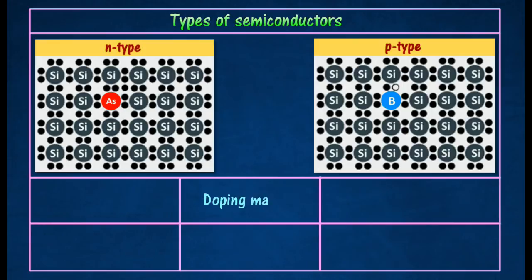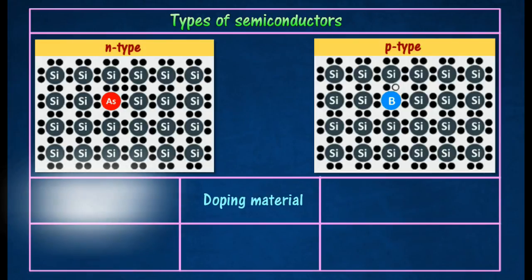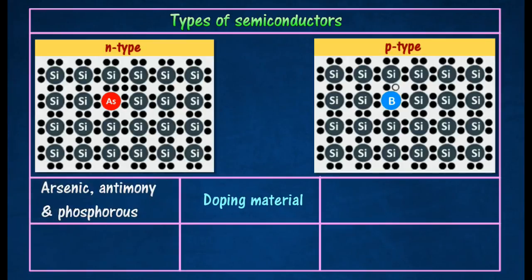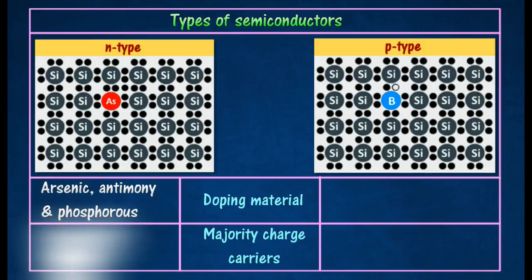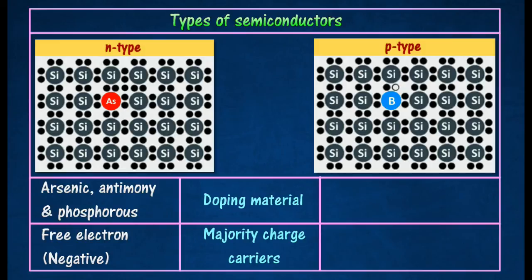N-type semiconductor is an extrinsic semiconductor which is obtained by doping the pentavalent impurity atom such as arsenic, antimony or phosphorous to the pure germanium or silicon semiconductor. The impurity atoms added provide extra electrons or free electrons in the structure and are called donor atoms. The electrons are majority charge carriers and holes are minority charge carriers.